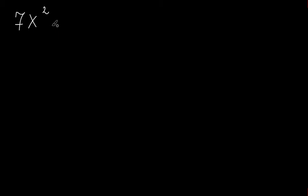Let's say we have 7x² plus 3x equals zero. Now this is not a full quadratic equation, and you could calculate the discriminant and do all the other steps we did in our previous example, but we could solve it faster.